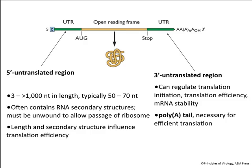The five prime untranslated region is typically 50 to 70 nucleotides, but some are very long. They often have secondary structure, and ribosomes need to pass through this region to get to the translation initiation codon — the AUG codon. Secondary structure, that is base-paired RNA stem loop structures, will impede the ribosome, so that has to be unwound. The length of this region and the secondary structure can influence translation efficiency.